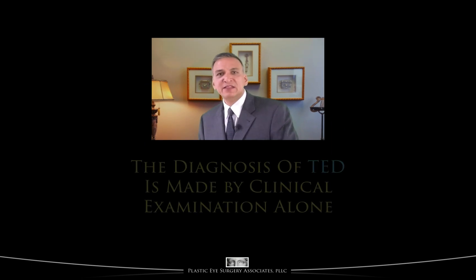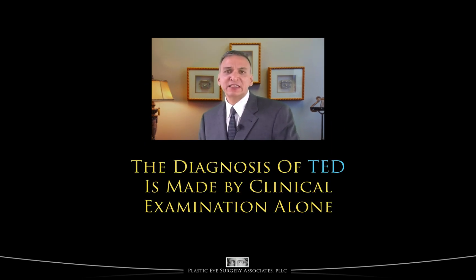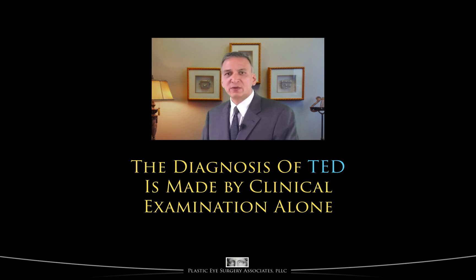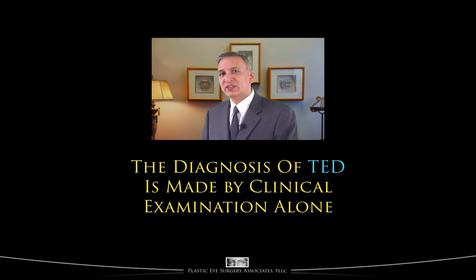We've explained that thyroid eye disease is not caused by thyroid hormone abnormalities, and that, as of today, blood tests are not readily available to detect all of the autoimmune antibodies causing the disorder. So there are absolutely no reliable tests to make or confirm the diagnosis. That means that the diagnosis of thyroid eye disease is made by clinical examination alone, by an experienced physician. Once someone knows and looks for the characteristic signs of thyroid eye disease, the diagnosis is usually easy. In Section 6 of this video series, we will explain these characteristic signs.